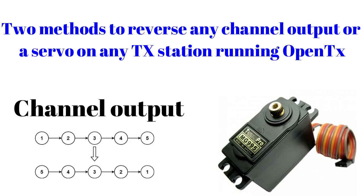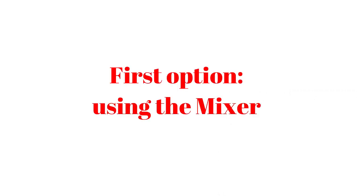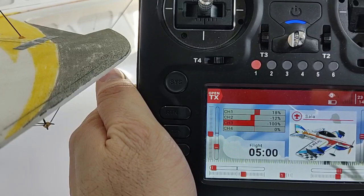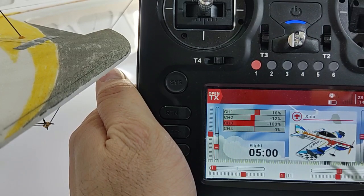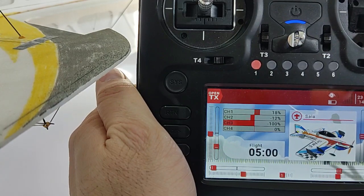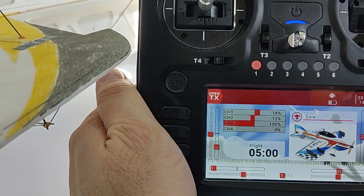If you want to reverse a servo or any control output in any station running OpenTX, there are two very easy ways to do this. For the beginning, let's see how the station command works.